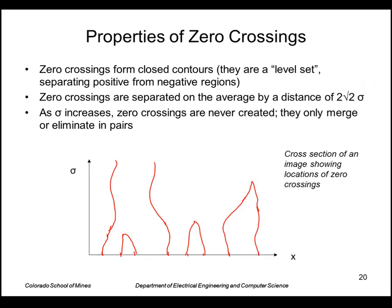And also as sigma increases, zero crossings are never created. They only merge or eliminate in pairs. So this is a sketch of an image slice, let's say, where x goes to the right. And we can mark zero crossings after taking Laplacian of a Gaussian. And then if we were to increase sigma, so going up in scale space and detect the zero crossings, eventually they start disappearing like this. But they're never created. You never see a curve that would look like this.